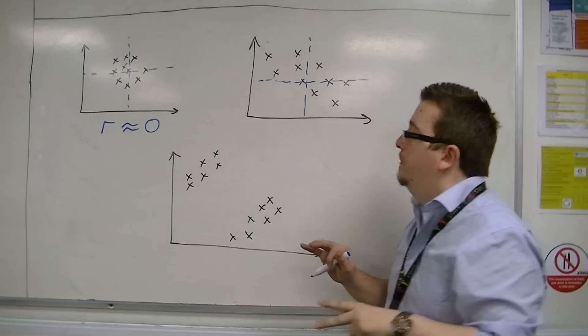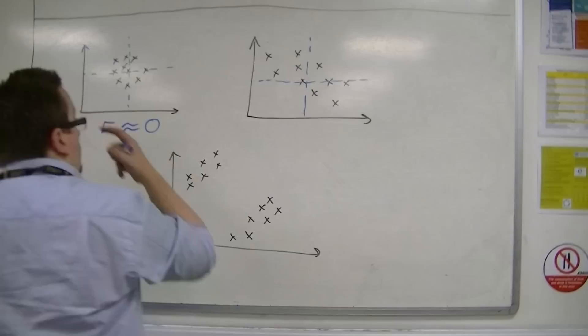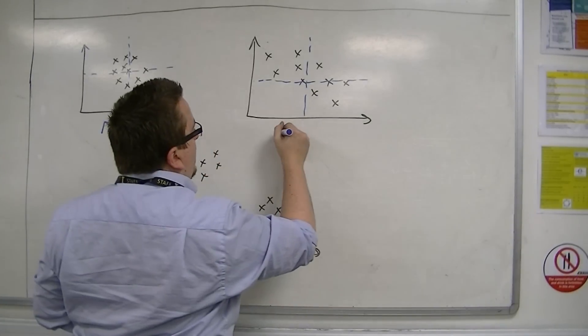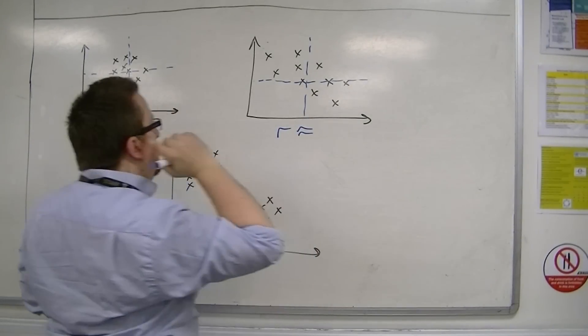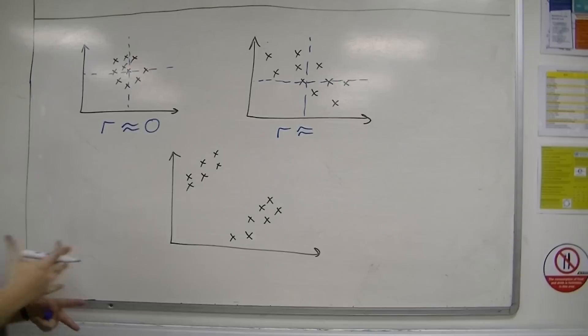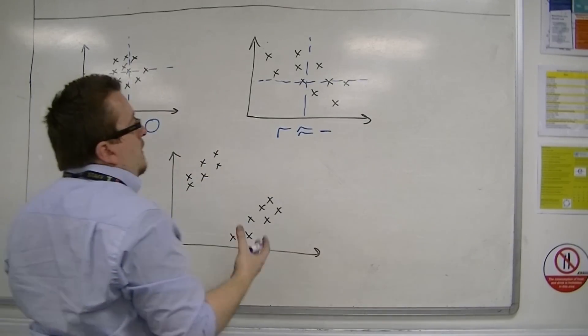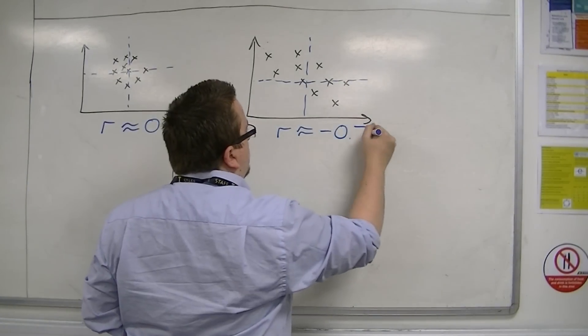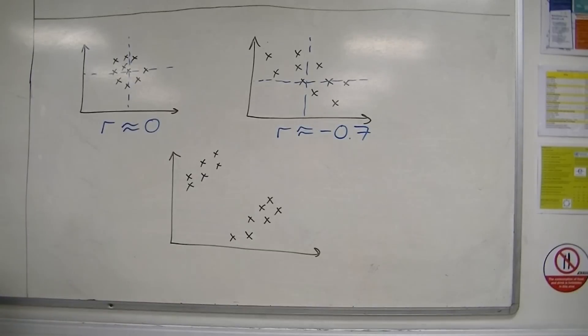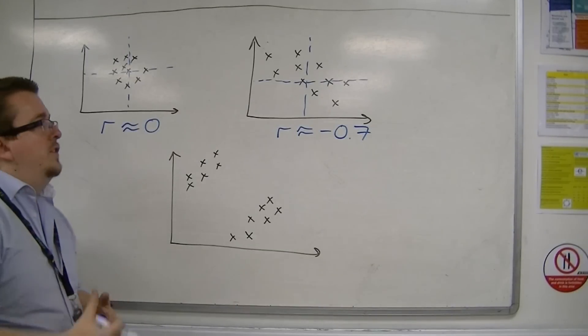So it's going to be a negative value. We'd probably be looking at something like R is probably minus 0.7, maybe 0.6. But a negative correlation.